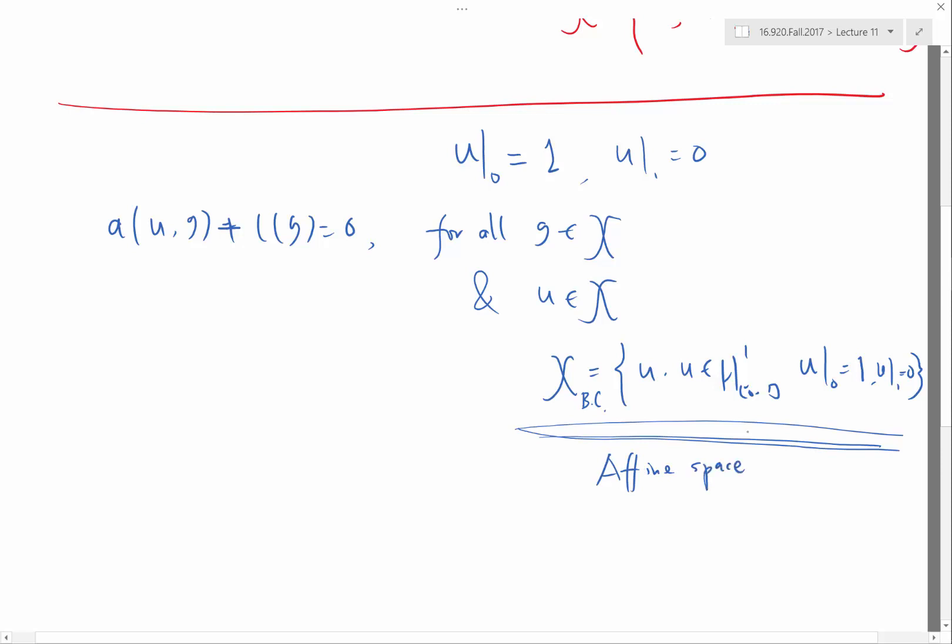So what does an affine space mean? It just means it's equivalent of one point in the space plus a linear space. So all the deltas, the difference between any two vectors in this affine space forms a linear space. If you take two u and v both in this affine space, then u minus v, all the possible u minus v's, would form a linear space. Because if I have u and v both satisfying the same boundary condition, then u minus v would satisfy a zero Dirichlet boundary condition. So affine space just means one point plus a linear space.